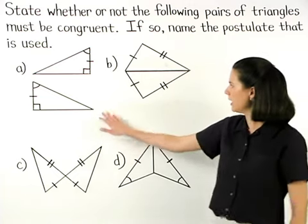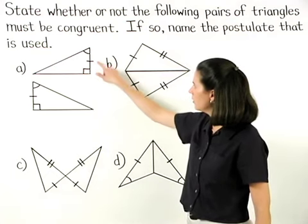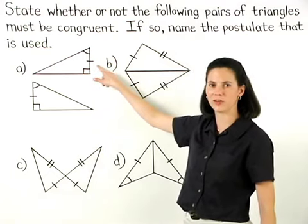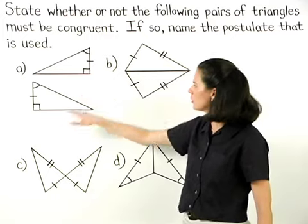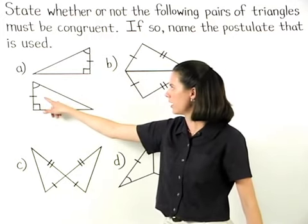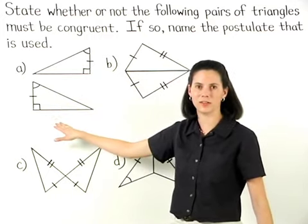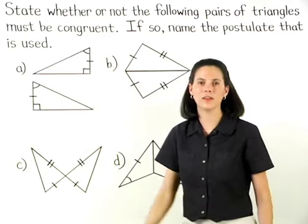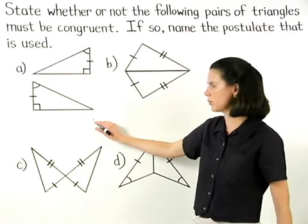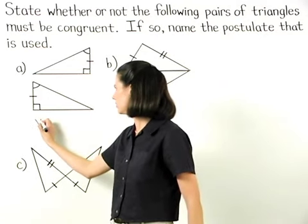In Part A, notice that we have two angles and the included side of one triangle congruent to two angles and the included side of a second triangle. Therefore, we can say that the triangles are congruent by angle-side-angle.